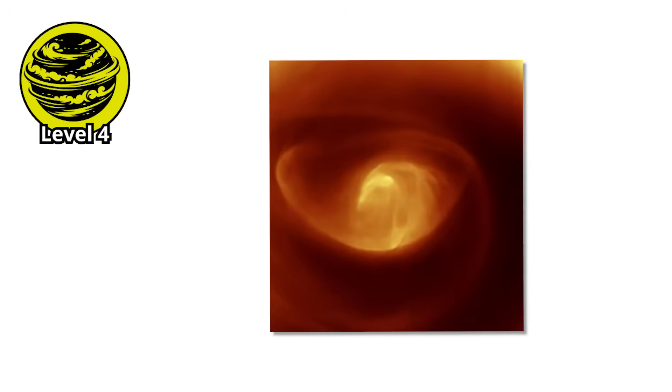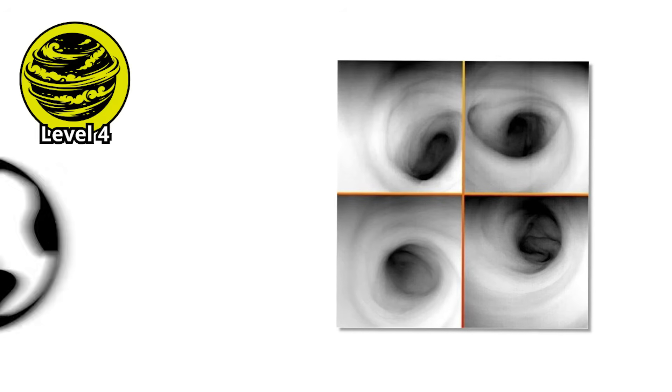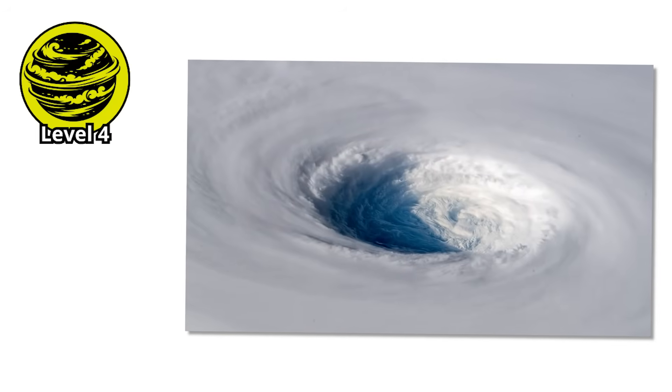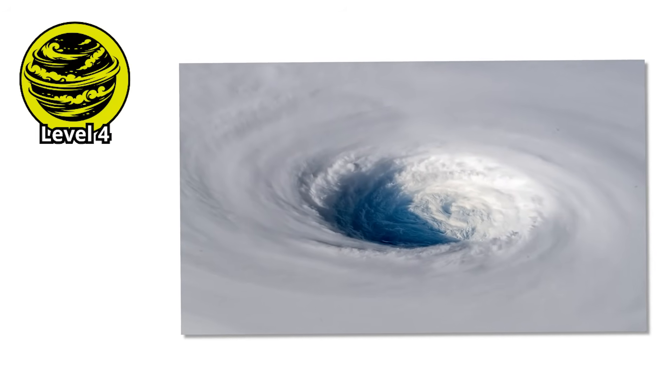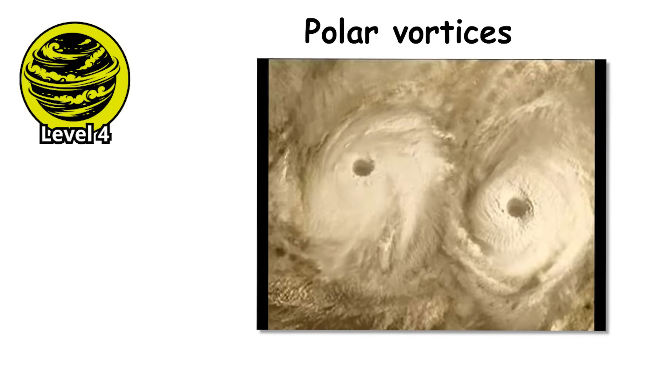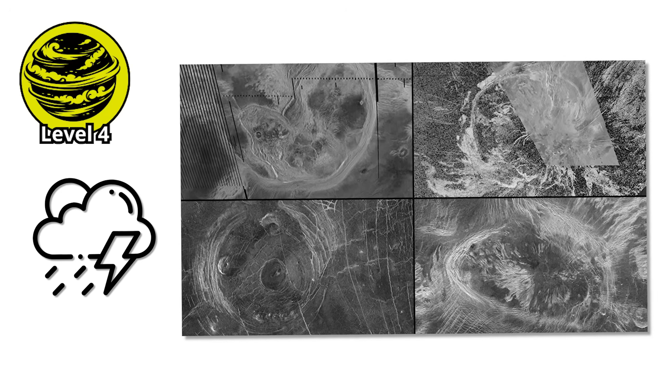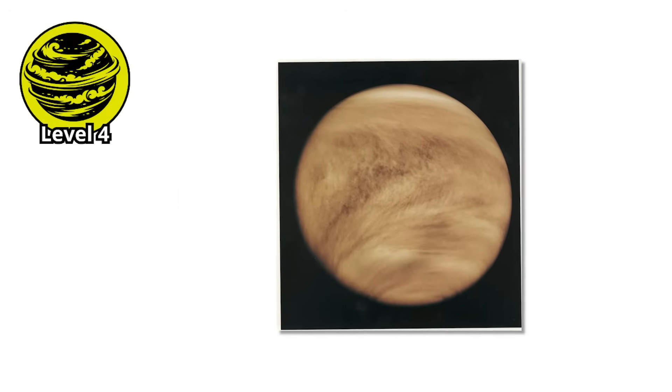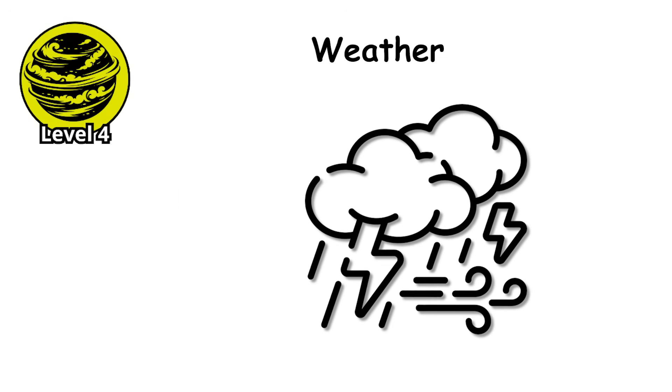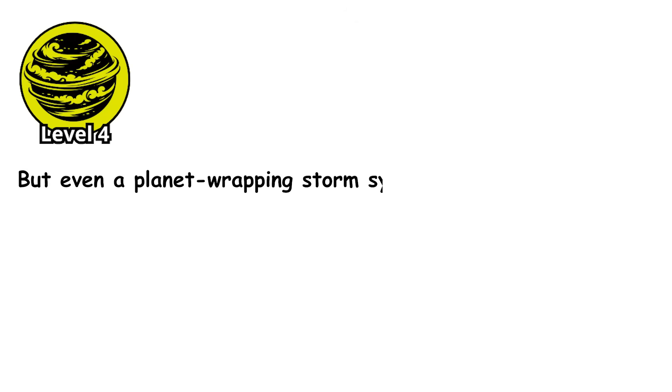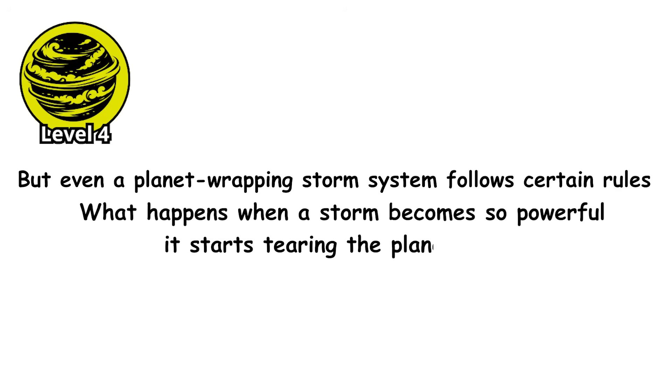This super-rotation creates a permanent storm pattern at Venus's poles. Each pole has a massive vortex, a hurricane-like structure larger than Earth, with a dark, swirling center visible in ultraviolet images. These polar vortices don't move. They're anchored to the poles, spinning endlessly as the super-rotating atmosphere feeds into them. The storm at Venus's south pole has been observed changing shape over days and weeks, morphing from a circular vortex into a chaotic, irregularly-shaped structure before reforming. It's weather, but not as we know it. But even a planet-wrapping storm system follows certain rules. What happens when a storm becomes so powerful it starts tearing the planet apart?